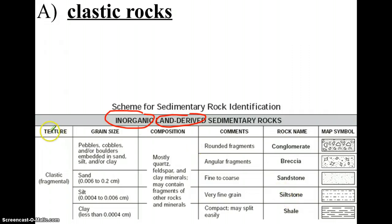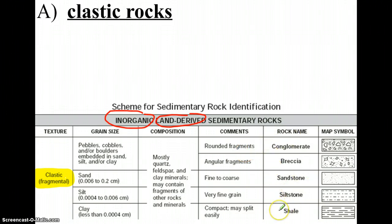You'll notice that in the texture column, all of these rocks are described as being clastic or fragmental. The word clast means pieces or fragments. These rocks are all made of pieces or fragments of other rocks. You'll notice the composition is the same for all of them — they are made mostly of quartz and feldspar, with some clay, and may contain fragments of other rocks or minerals.